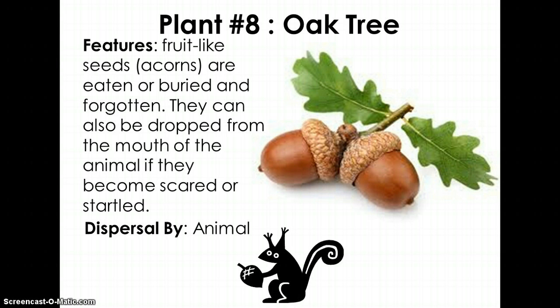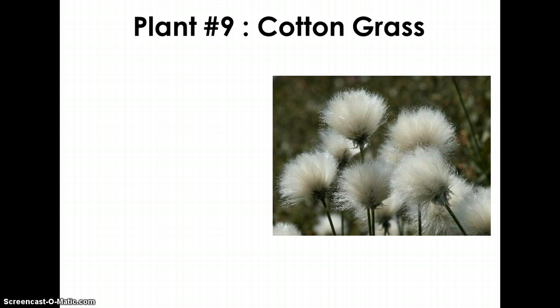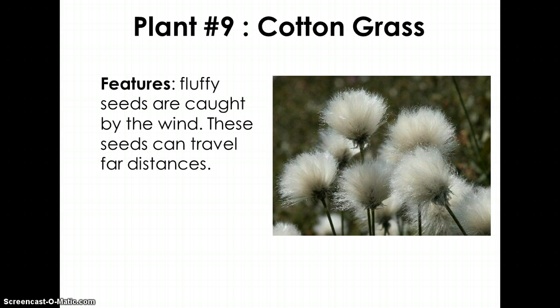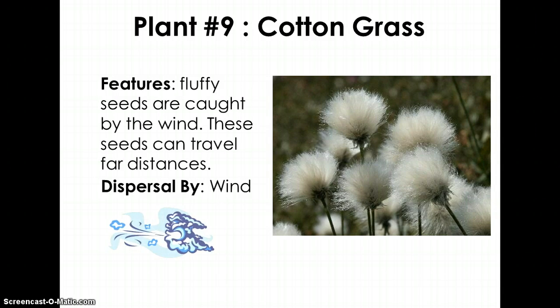Last but certainly not least, plant number nine is the cotton grass. These fluffy seeds are caught by the wind and can travel far distances. The method of dispersal is wind.